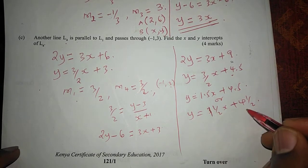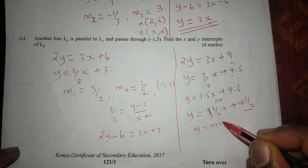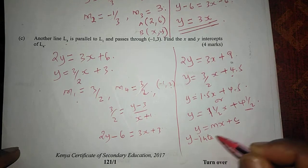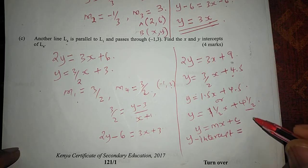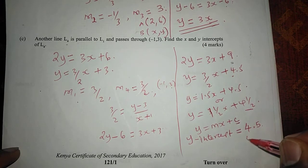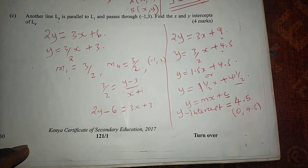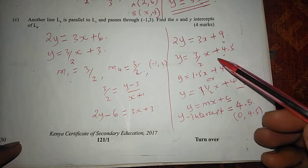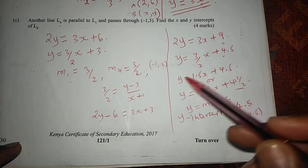The Y-intercept is always given by the constant C in the format Y equals MX plus C. Therefore, the Y-intercept of the fourth line is 4.5. If written as a coordinate, it will be (0, 4.5). For the X-intercept, we set Y equals to 0.